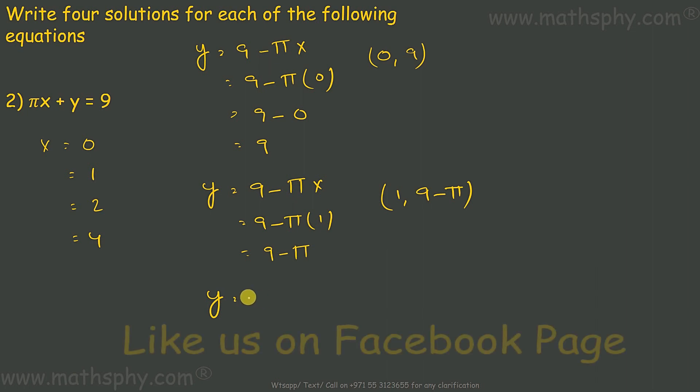Third can be, let's take x as 2. So, 9 minus, this would be 2 pi. So, x and y, x is 2 and y is 9 minus 2 pi.